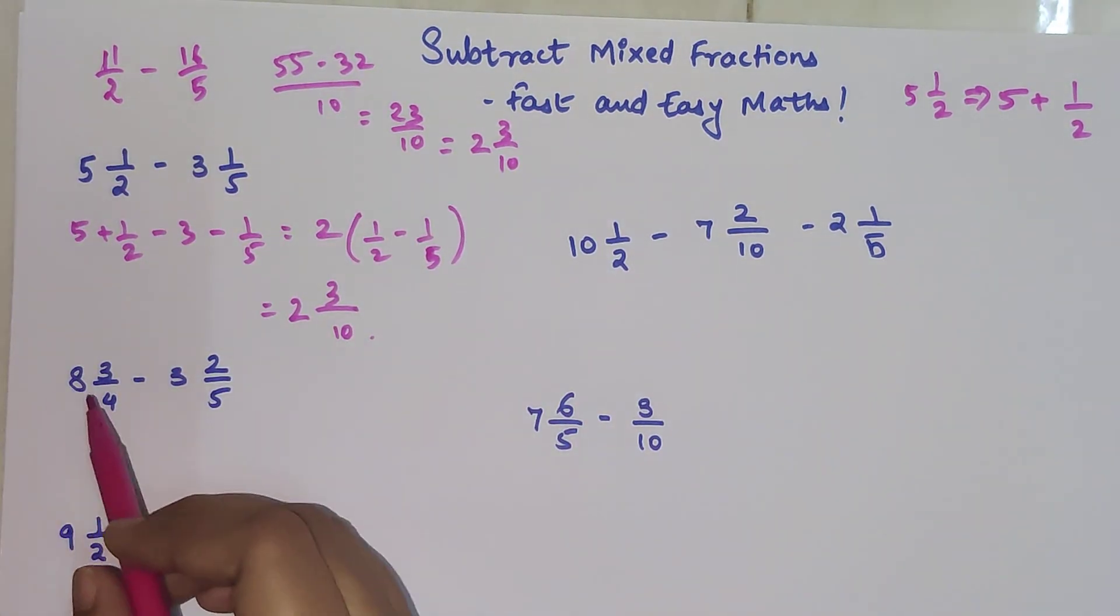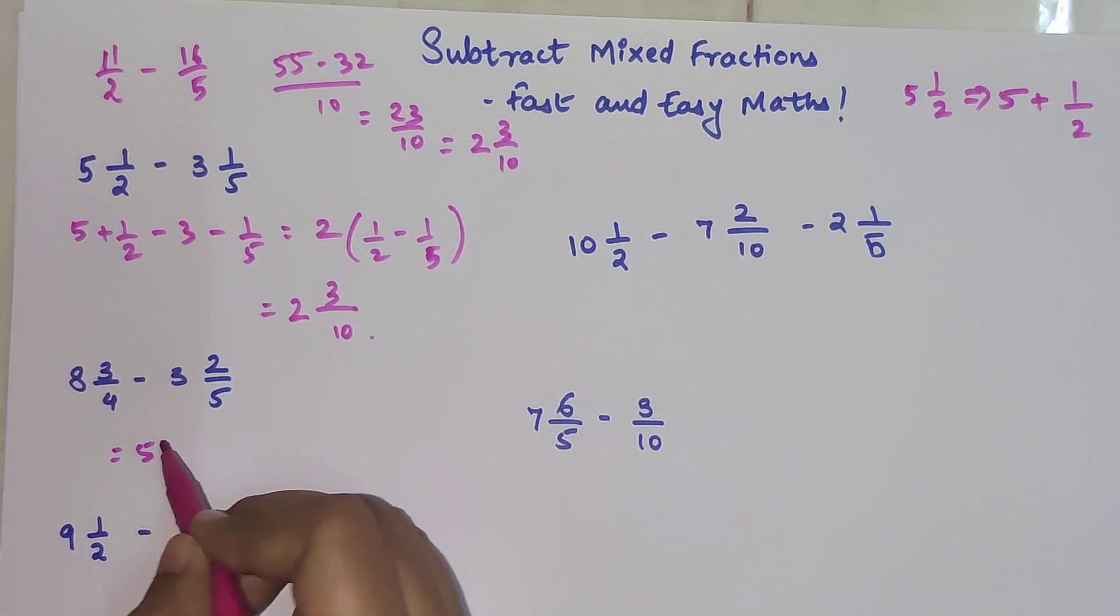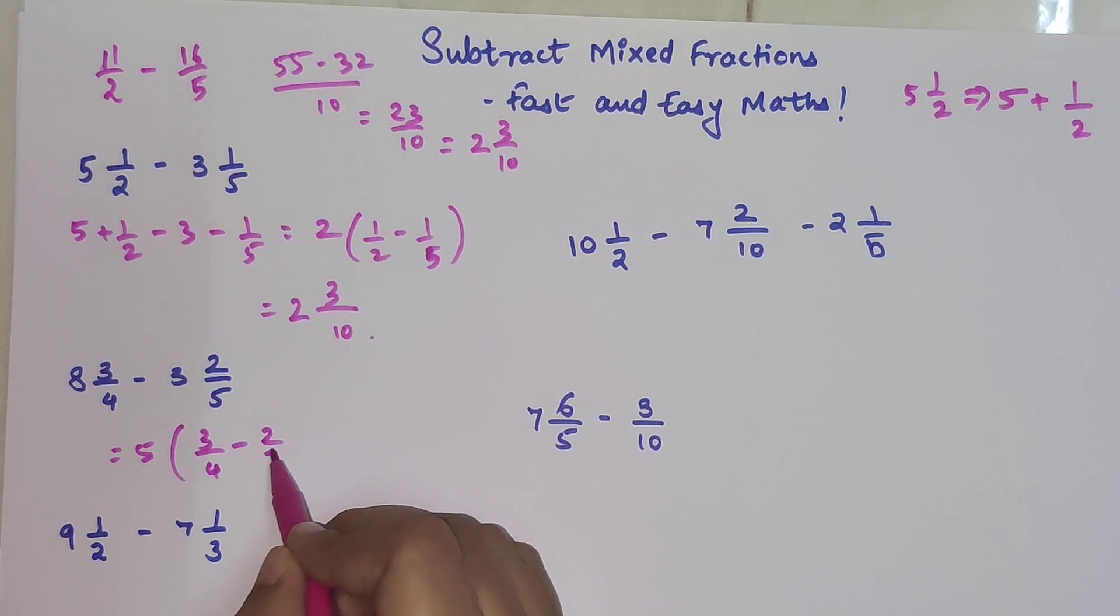Let's do this one more time. 8 minus 3 gets you 5, and then in bracket you have to subtract 3/4 minus 2/5.